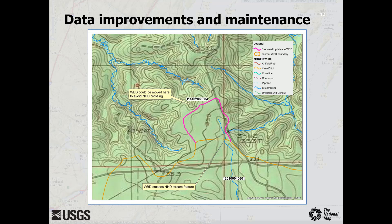The example shows a simple WBD update. The original WBD, shown as the orange line, is cutting across the NHD flowline, the blue line. This intersection can be avoided by moving the WBD to the ridge line north of the end of the flowline, shown as the pink line.